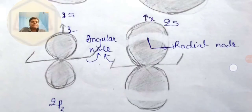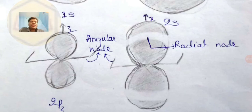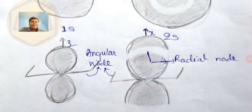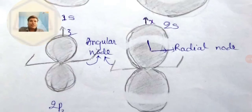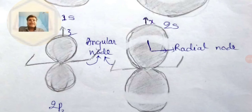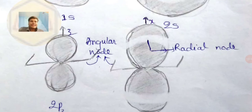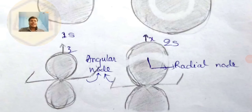Now let's go to p orbitals. Consider 2pz. The principal quantum number is 2, and p orbitals have a dumbbell shape. For 2pz, the lobes are oriented along the z axis. There are three different p orbitals: px with lobes along x axis, py along y axis, and pz along z axis.